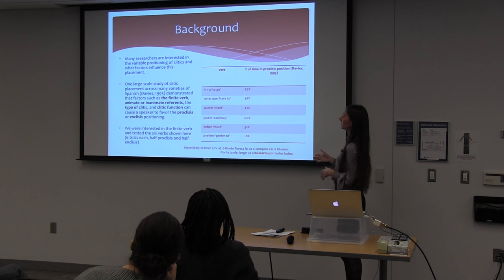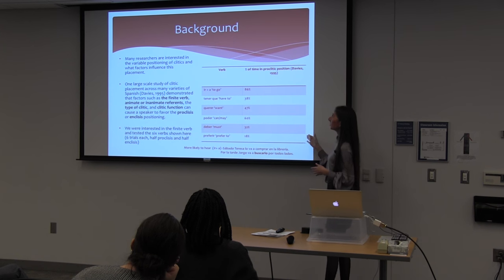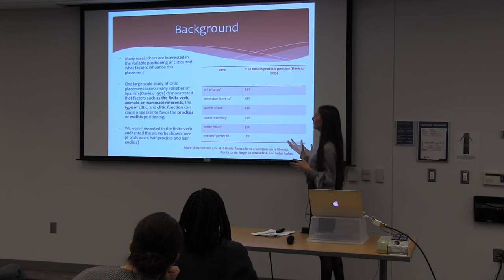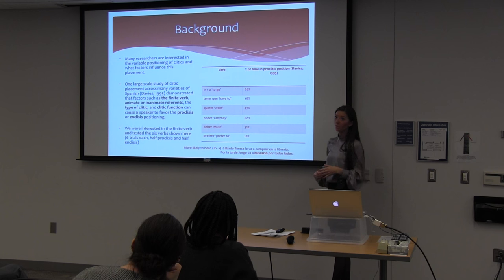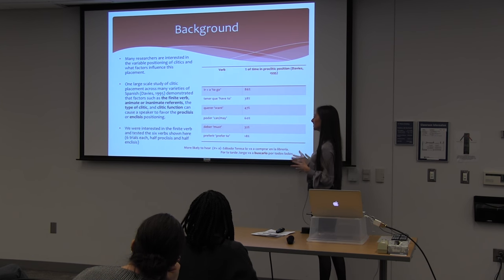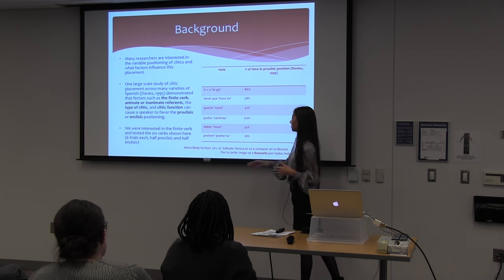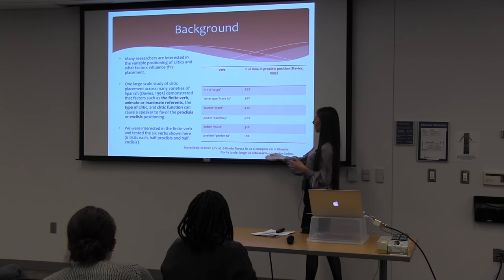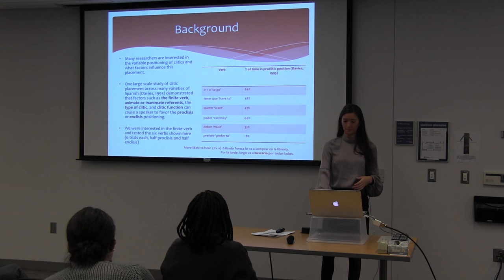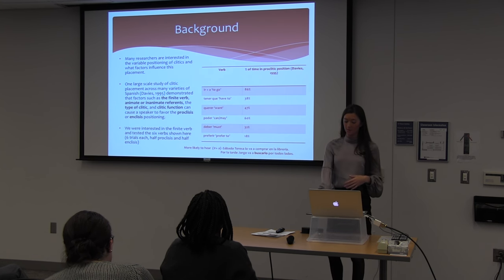These are the six verbs we chose to include in the study — this shows the percent of time in the proclitic position from the Davies Corpus. For example, with ir a, the finite verb 'to go,' 86% of the time Davies found it was used in the proclitic positioning. So we're more likely to hear the clitic in proclitic position than in enclitic position. On the other end of the spectrum, poder only has 18% favoring proclitic position.